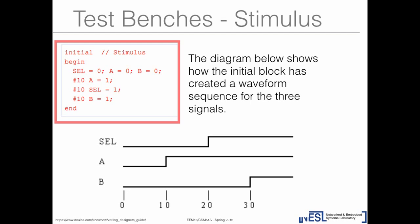What we wrote in the initial block corresponds to a waveform. At time 0, select, A, and B are all 0. After 10 time units, A becomes 1. After another 10 units, select becomes 1. After another 10, B becomes 1. We've created the values of these signals over time.